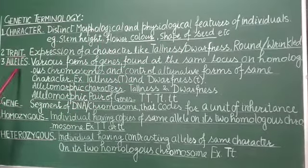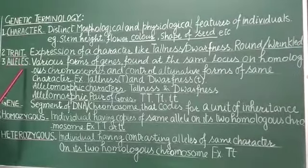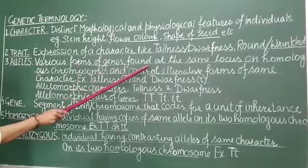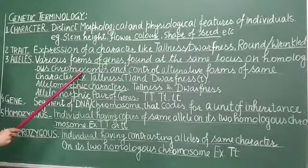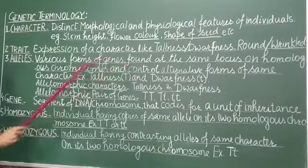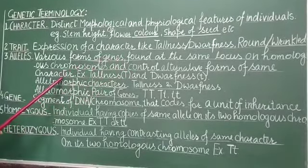The next is alleles. Alleles are various forms of genes found at the same locus on homologous chromosomes and control alternative forms of same character.